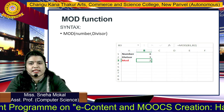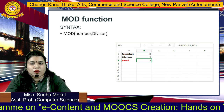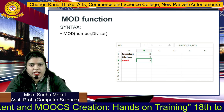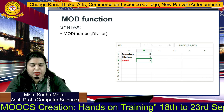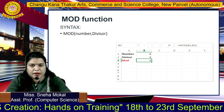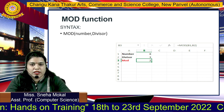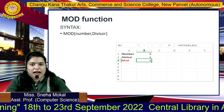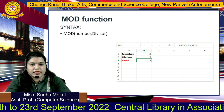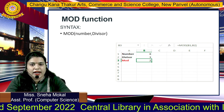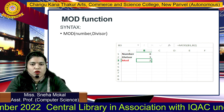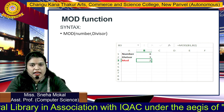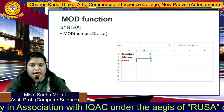So next is the MOD function. MOD means इसमें आपको number डालना है और divisor डालना है — मतलब इसमें आपको 2 parameter pass करने हैं. Suppose आपने number लिया 8 और divisor लिया 3. अभी 8 divided by 3 किया, तो remainder क्या आएगा — 2. तो MOD का answer रहेगा 2. आपका remainder जो रहता है वो MOD find करके देता है.